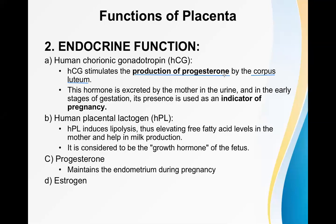Progesterone is responsible for the decidual reaction in the endometrium, and because of that decidual reaction, decidua basalis is formed — an important part of the placenta. Without progesterone, the decidual reaction could never occur. Another important role of HCG is that it is excreted by the mother in her urine — its presence in early gestation is the indicator of pregnancy, which is the basis of the urine pregnancy test (beta-HCG detection).